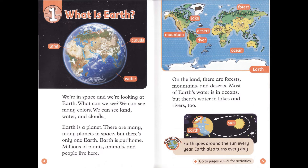Millions of plants, animals, and people live here. On the land, there are forests, mountains, and deserts. Most of Earth's water is in oceans, but there's water in lakes and rivers, too.